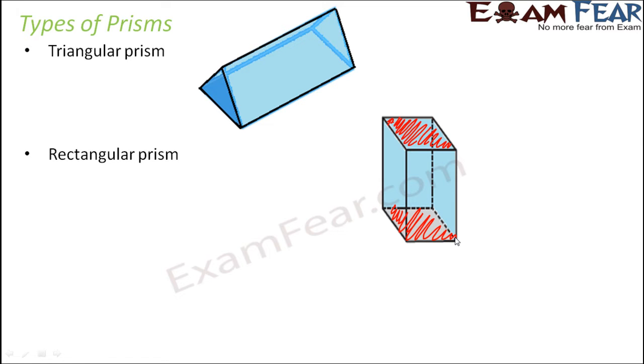So the base and the top are rectangles. So this is a rectangular prism and all the other faces, they are parallelograms. In this case, the parallelograms are also rectangles.